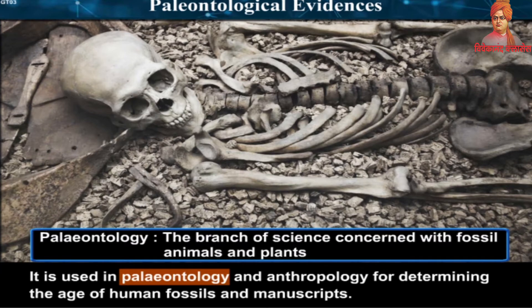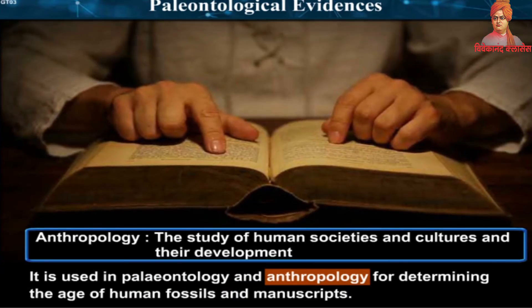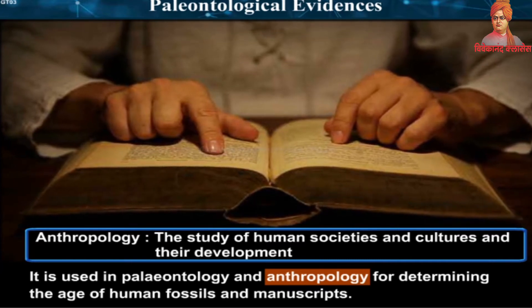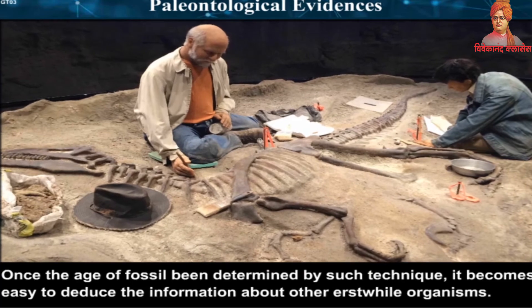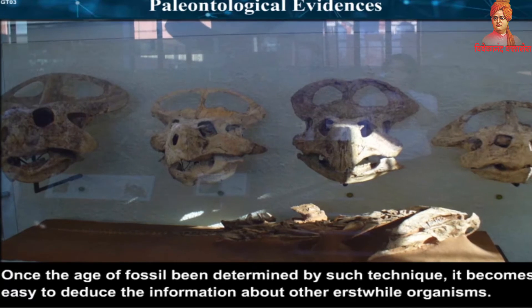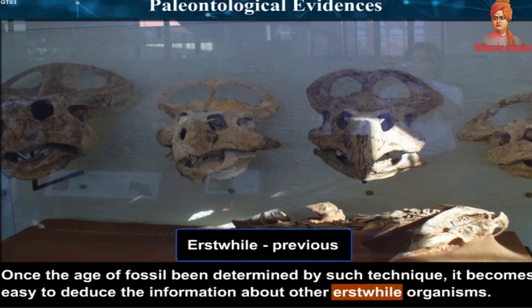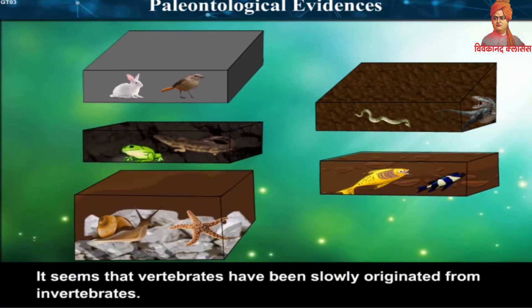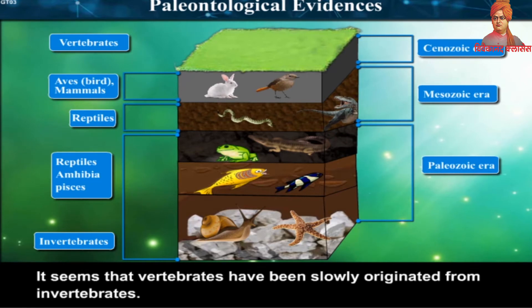Paleontology is the branch of science concerned with fossils of animals and plants. Anthropology is the study of human societies and cultures and their development. Once the age of a fossil has been determined by such technique, it becomes easy to deduce information about other erstwhile organisms. It seems that vertebrates have been slowly originated from invertebrates.